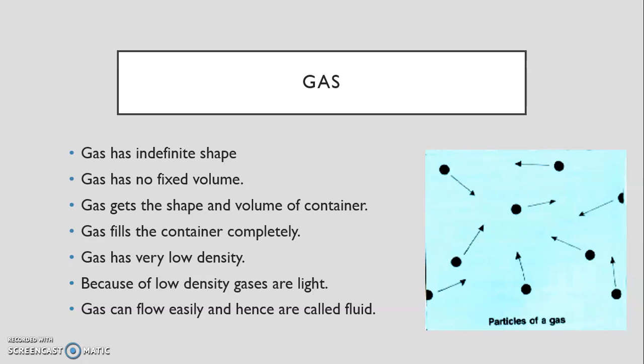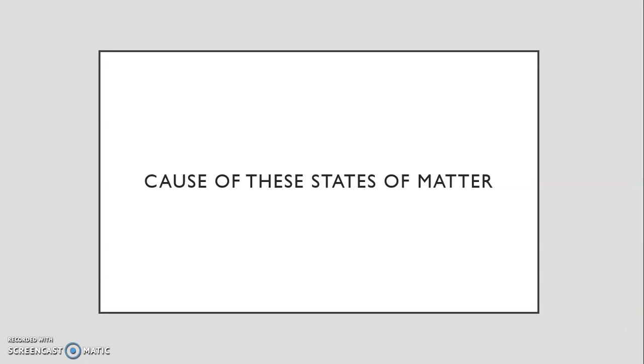Gas also gets the shape and volume of a container, such as the liquid, however it also gets the volume. So that means that it fills up the container to the max, unlike liquid where the volume just stays the same. The gas is spread out and can take up the whole container. Gas has very low density, so because all the particles are spread out very much, it makes it lighter. Whereas if they were all compact, it would make it very dense and hence be heavier.